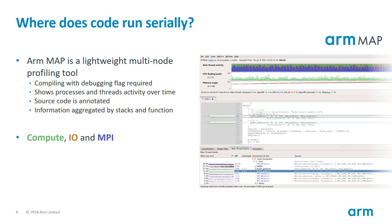ARM MAP is the right tool to investigate the source code of the application. It only requires the source code to be recompiled with the debugging flag and to prefix the executable in the job script with the map command to generate a profile. This profile is opened afterwards in a GUI. The GUI displays the application activity per thread or process in a timeline. The color specifies the kind of activity: green for computations, orange for IO, and blue for MPI communications. The source code is annotated with activity information, making it easy to understand where execution time is spent.